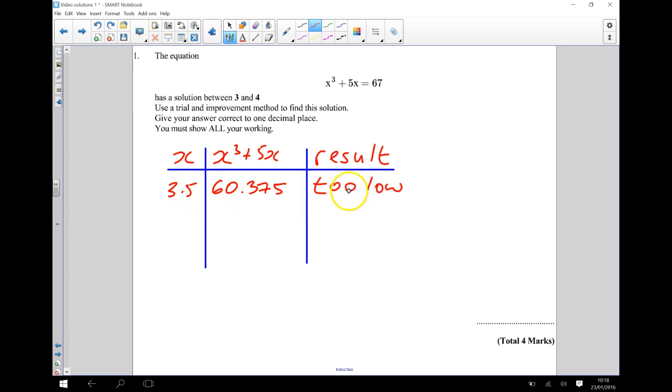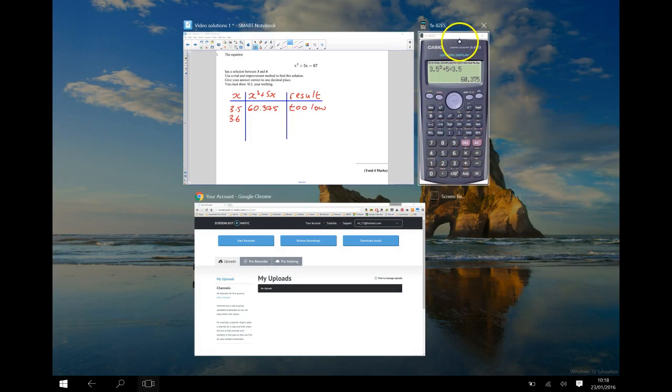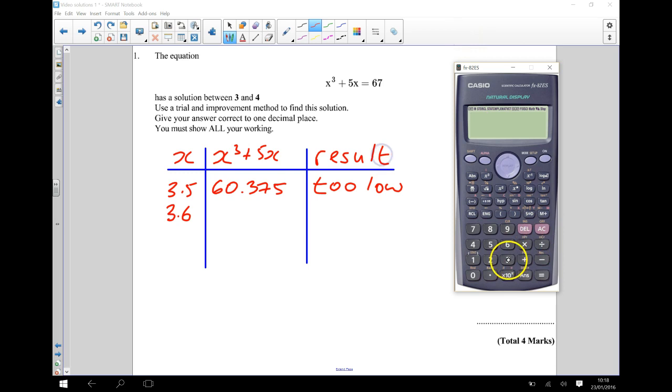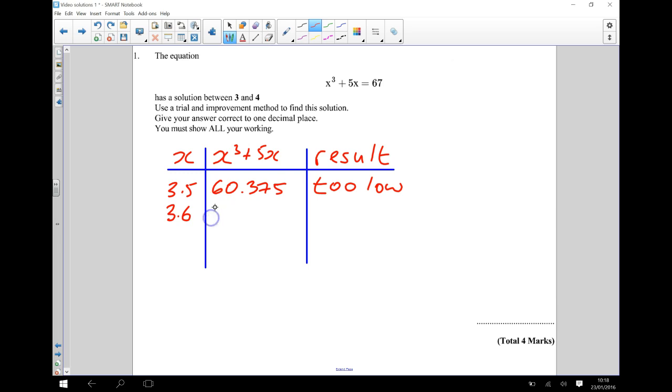So the next number I want to try is something higher than 3.5, so I'm going to go for 3.6. So if I do 3.6, that gives me 3.6 cubed plus 5 times 3.6, and that gives me 64.656. So that is still going to be too low. 64.656, and that's too low. So my next one I'll try is 3.7.